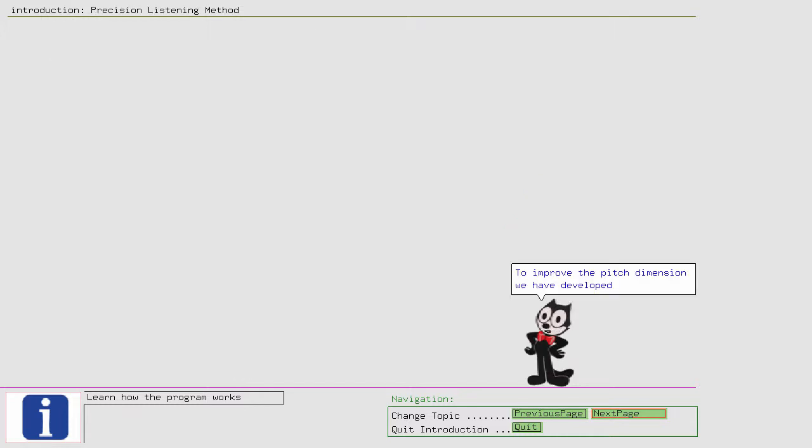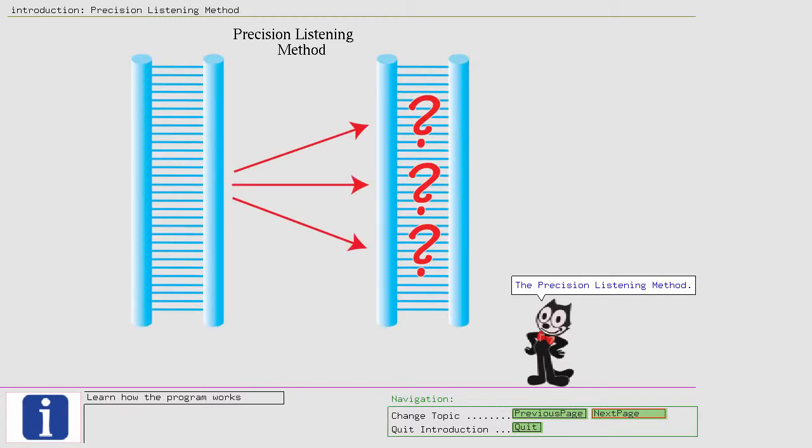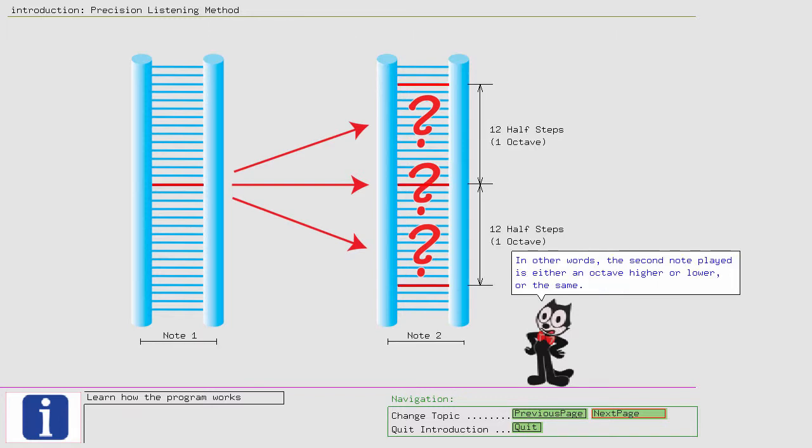To improve the pitch dimension, we have developed the precision listening method. The method starts with pitches that are far apart. In other words, the second note played is either an octave higher or lower, or the same. In this way, those who have never tuned an instrument can learn what basic tuning skill is: to recognize if a pitch is higher, lower, or the same.